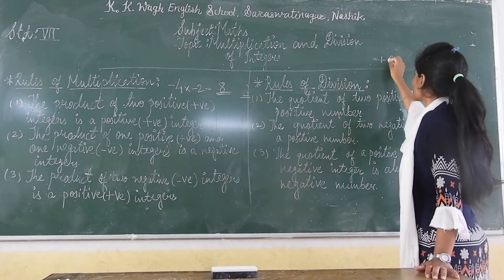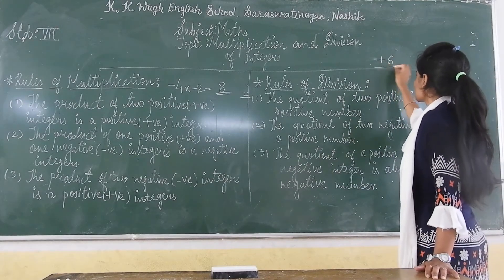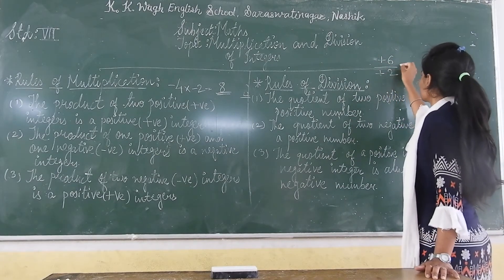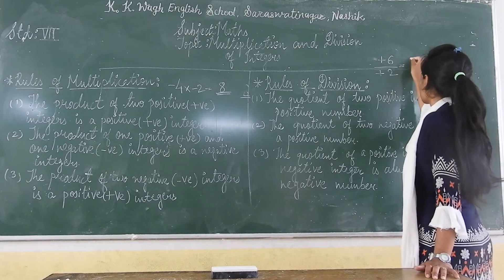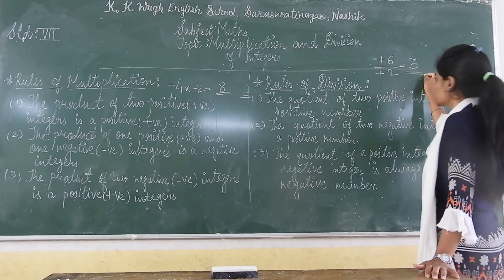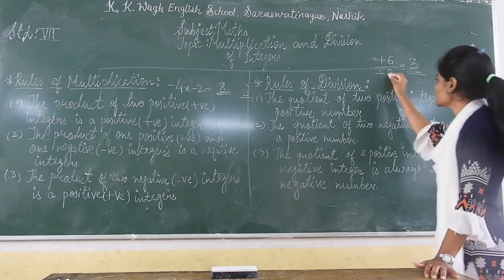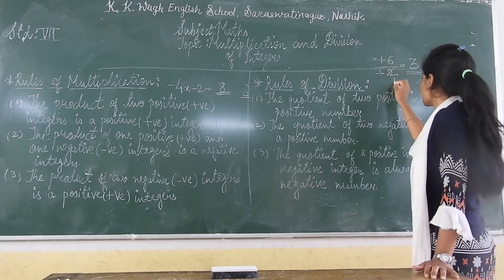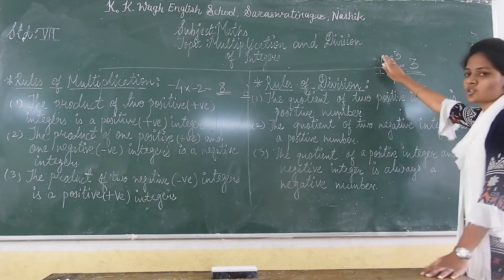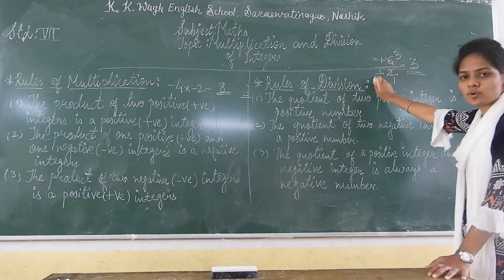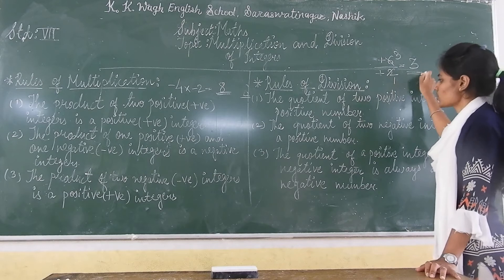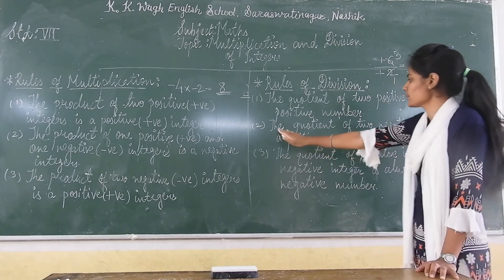For example, if we have plus 6 upon plus 2, the quotient will be plus 3. Two 1s are 2, two 3s are 6. So the answer of two positive numbers will be positive only.